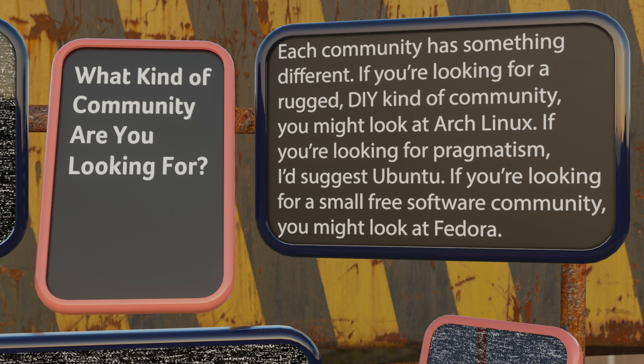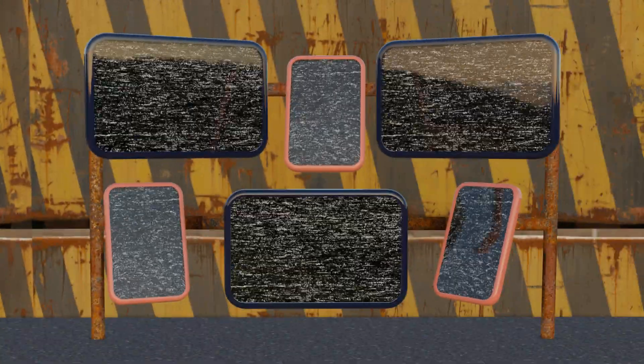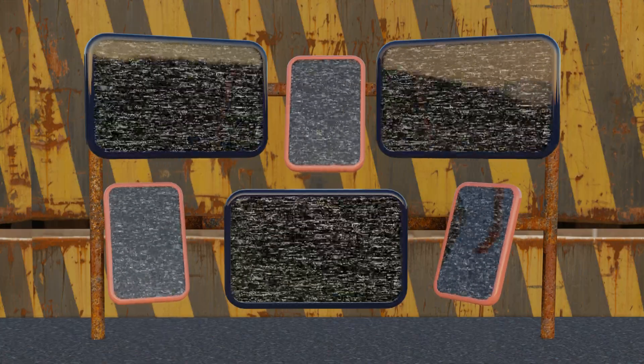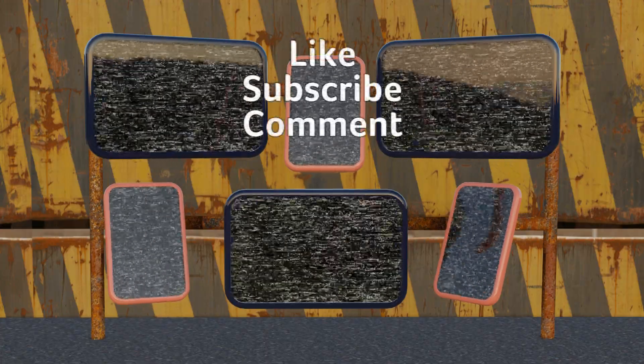What kind of community are you looking for? Each community has something different to offer. If you're looking for a rugged, do-it-yourself community, look at Arch Linux. If you're looking for fierce pragmatism, consider Ubuntu. If you're looking for a small but mighty free software community, look at Fedora. It's fairly simple to find out what kind of community a distro has by going to its respective subreddit and reading through posts and comments. Every community is helpful but in their own particular ways. The best Linux distro for programming is ultimately the one that meets your needs — that is the main criteria to have in mind when deciding.